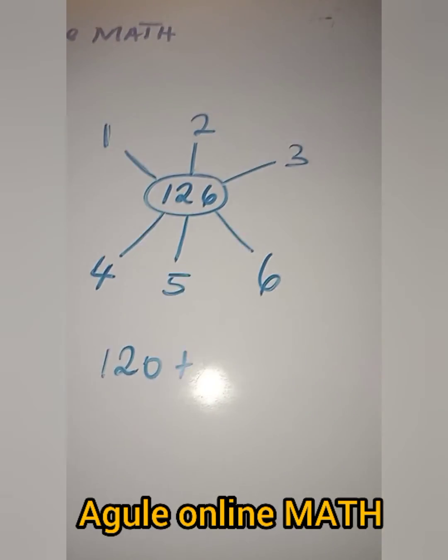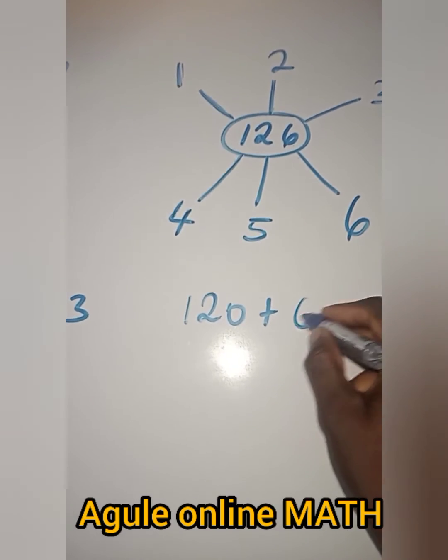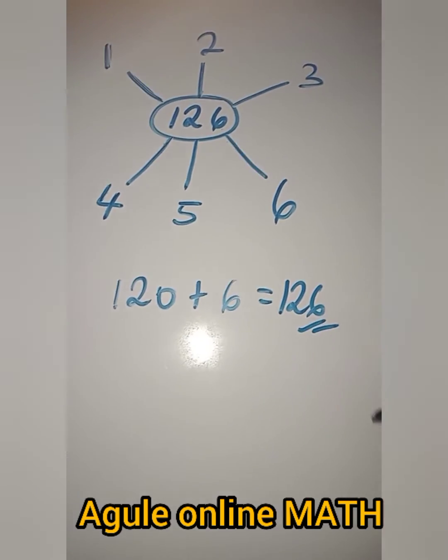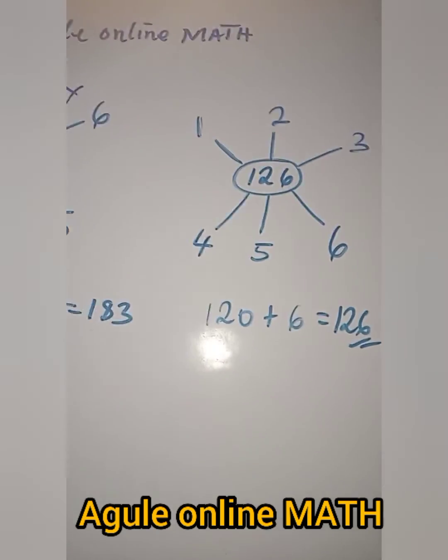1 times 2, 2. 2 times 3, 6. So plus 6. And of course, our answer is 126. So these have to obtain the 126 in the middle.